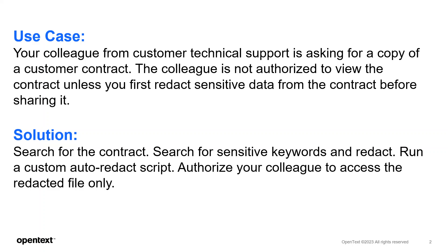The best way to demonstrate the new features is to look at a real-life use case and how Content Manager would help you solve this. In this use case, your colleague from Customer Technical Support is asking for a copy of a customer contract. The colleague, however, is not authorized to view the contract unless you first redact sensitive data before sharing it. The solution is to use Content Manager to search for the contract, find the sensitive keywords that need to be redacted, possibly run a custom auto-redact script, and then authorize your colleague to access the final redacted file.